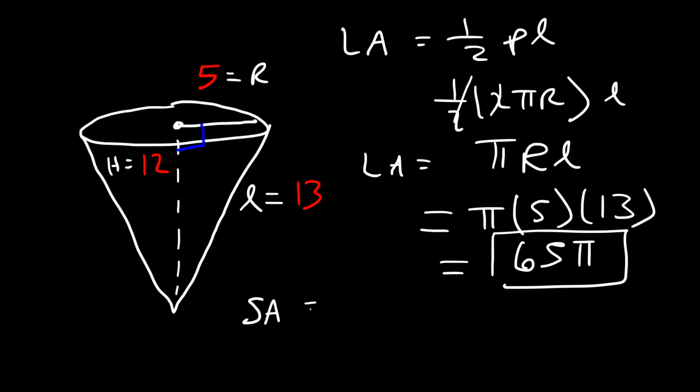Now let's focus on calculating the total surface area. So that's equal to the area of the base plus the lateral area. The area of the base is πR², the lateral area is πRL. So this is the formula to calculate the total surface area of a cone.